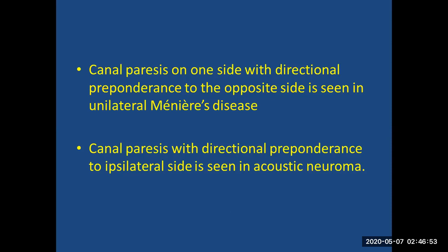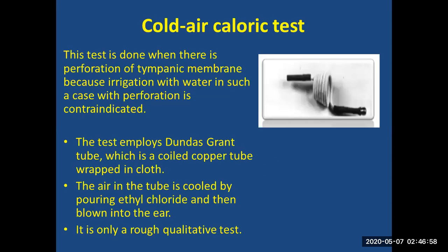Cold air caloric test: Instead of cold water, cold air is used. This test is done when the patient has a perforated tympanic membrane, since water irrigation is contraindicated in such cases. A Dundas Grant tube — a coiled copper tube wrapped in cloth — is used; air is cooled by pouring ethyl chloride and then blown into the ear. This is a rough qualitative test and is not routinely done.